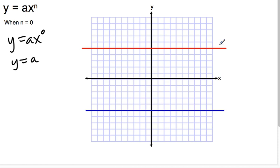One example of it would be like this, where we have y equals 5, shown by this red line. And y equals negative 5, shown by the blue line. So that's just your simple constant function that we've talked about before.